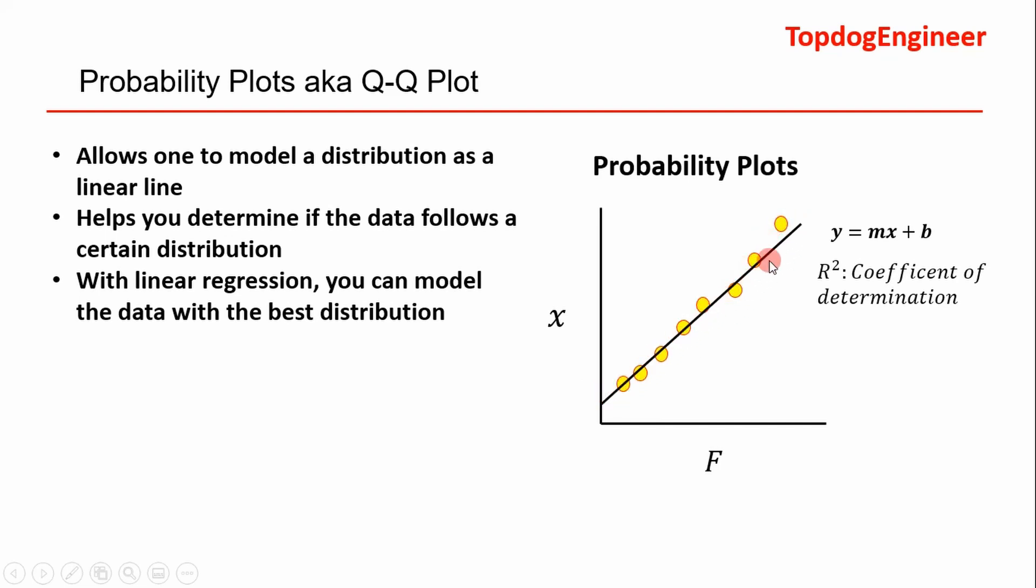What it allows you to do is to perform linear regression to see if your distribution fits through the data nicely. You can use a metric known as the coefficient of determination. In Excel it does it for you. You can use that to determine how well your data, your trend line, fits through the data.